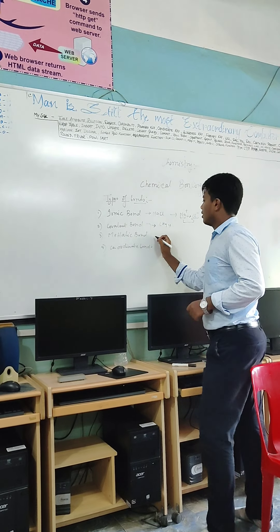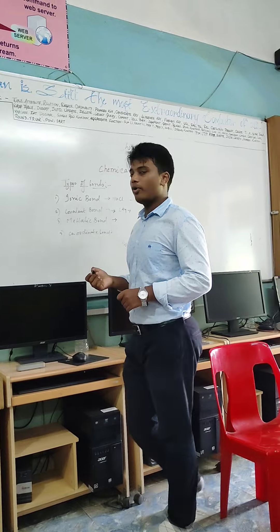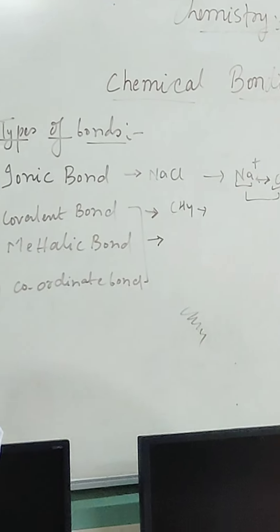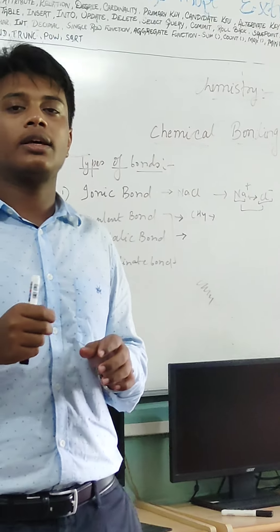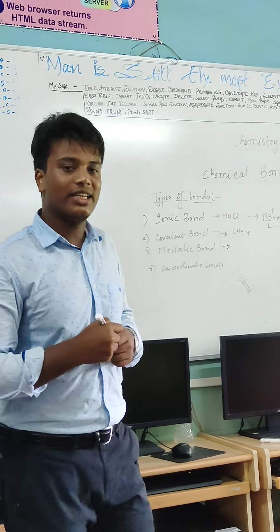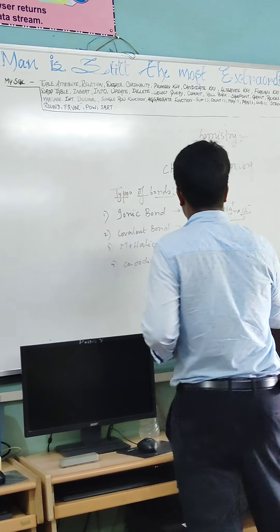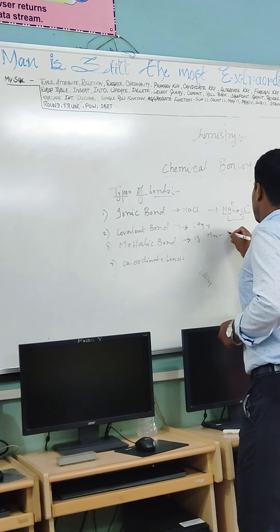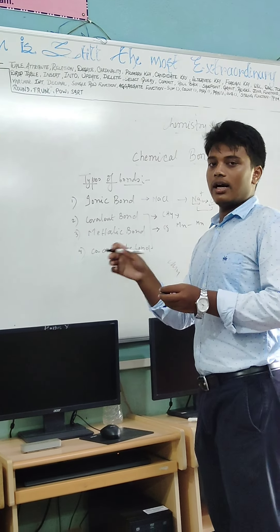Next is metallic bond. Metallic bond forms when outermost electrons of an atom are shared with the outermost electrons of another metal atom. It generally occurs only in metals, and it predominantly occurs in d-block elements.